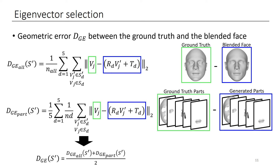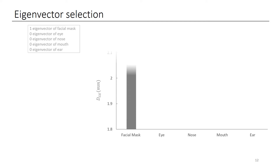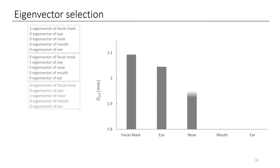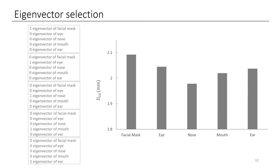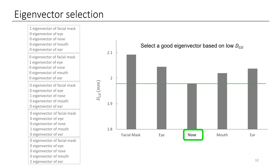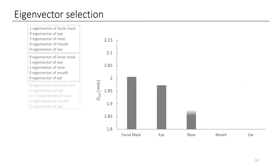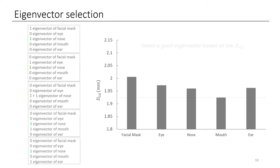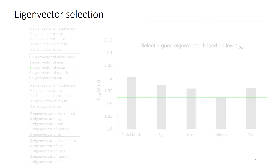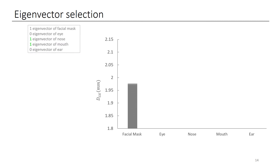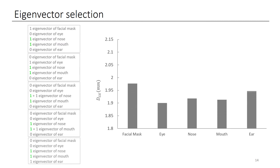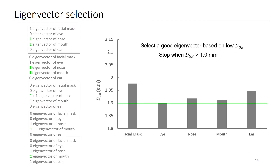Finally, we average the two into a global error. The rectangles on the left represent the five configurations that we compare. We add eigenvectors by incrementally selecting one from a specific part based on the improvement of face reconstruction. For example, the first eigenvector of the nose was added, and now the mouth is the next best one. This process is continued until the reconstruction error is below one millimeter.